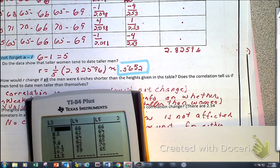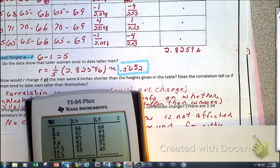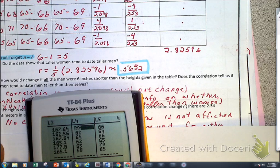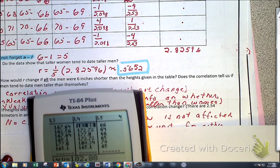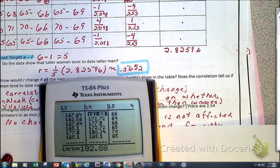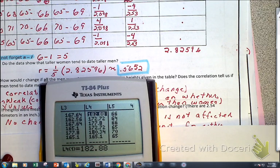Now, I have my men here and my women here. And this was the original data. So, now, I'm going to go to my L3 and L4. So, I'm going to go L5 times 2.54. And that gives me the measurement of the women in centimeters. And then, I'm going to go to my L4. And that's going to be, I'm looking at my men. So, that's going to be L6 times the 2.54.